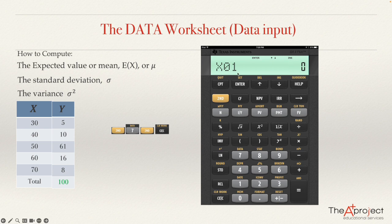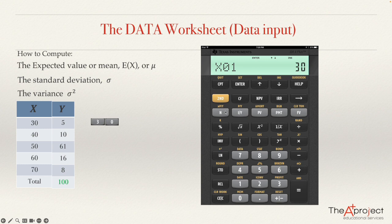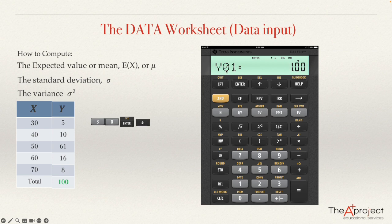After pressing 2nd DATA and 2nd CLEAR WORK, the calculator screen shows X01. It's asking for the first value of x, which is 30. Press 3, 0, and enter. Then scroll down — the calculator asks for the first y value, which is 5, because the probability was multiplied by 100 and the decimal disappears. Type 5 and enter.